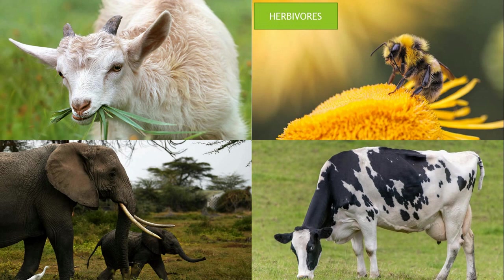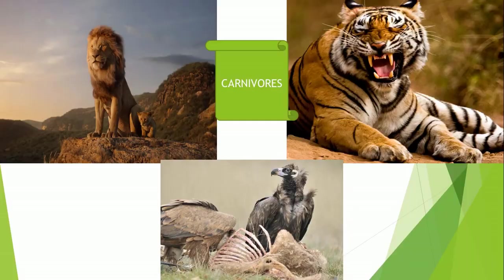Second are carnivores. Animals which eat the flesh of other animals are called carnivores, such as lion, tiger, leopard, jackal, etc. These have sharp teeth and claws for tearing flesh. Some birds like vultures, eagles, and kites also eat flesh. These have hooked beaks to tear flesh and sharp claws to catch their prey.